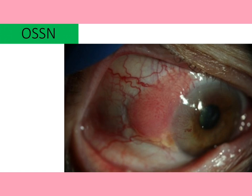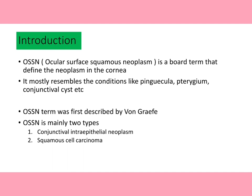Hello friends, welcome to my new video. Today I'm going to discuss a very important topic — OSSN. The full form is Ocular Surface Squamous Neoplasia. OSSN is a broad term that defines neoplasm of the cornea. It is a wide spectrum of disease indicating the abnormal growth of dysplastic cells over the ocular surface.